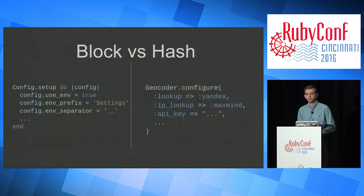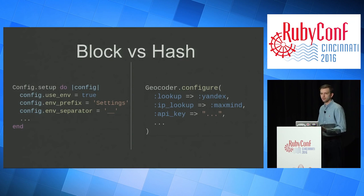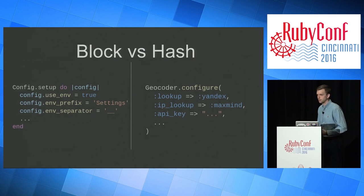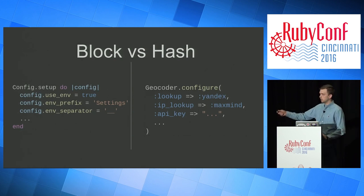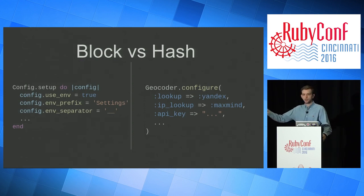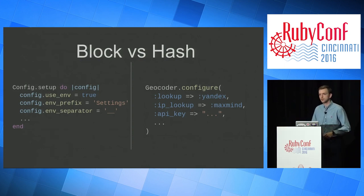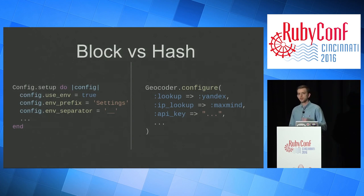You're probably wondering which one you should use — a block or a hash. I'm of the opinion that the block is more Ruby-like. You pass in an object, you work on that object. With the hash on the right, there's a lot of redundancy — colons, hash rockets, commas — that doesn't really add to the intention. When you look at config.setup on the left, every time you operate on that config variable, it's intentional — you're explicitly saying, I have this object and I'm setting a configuration value on it.